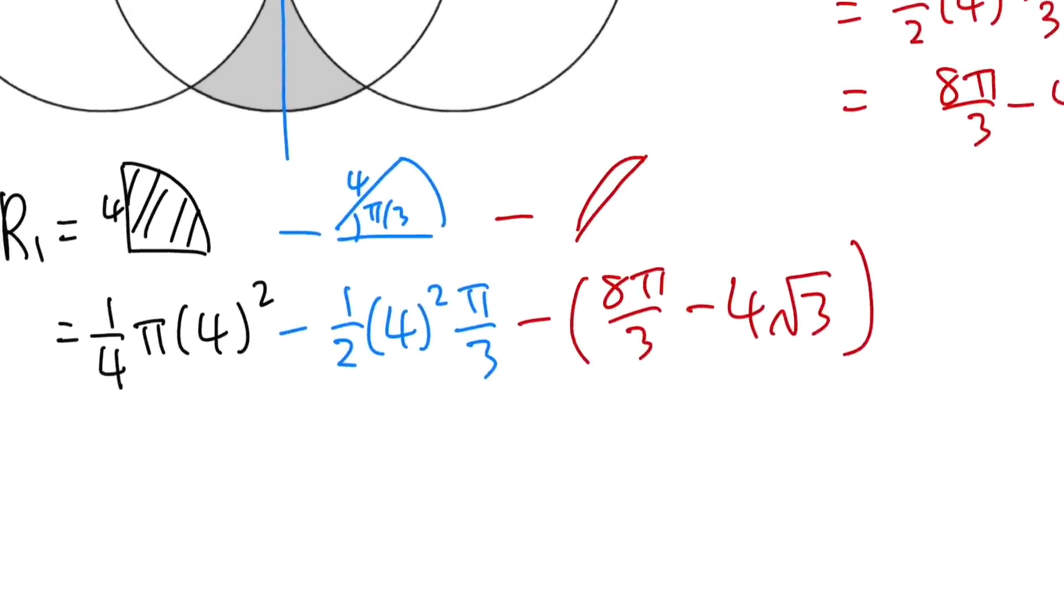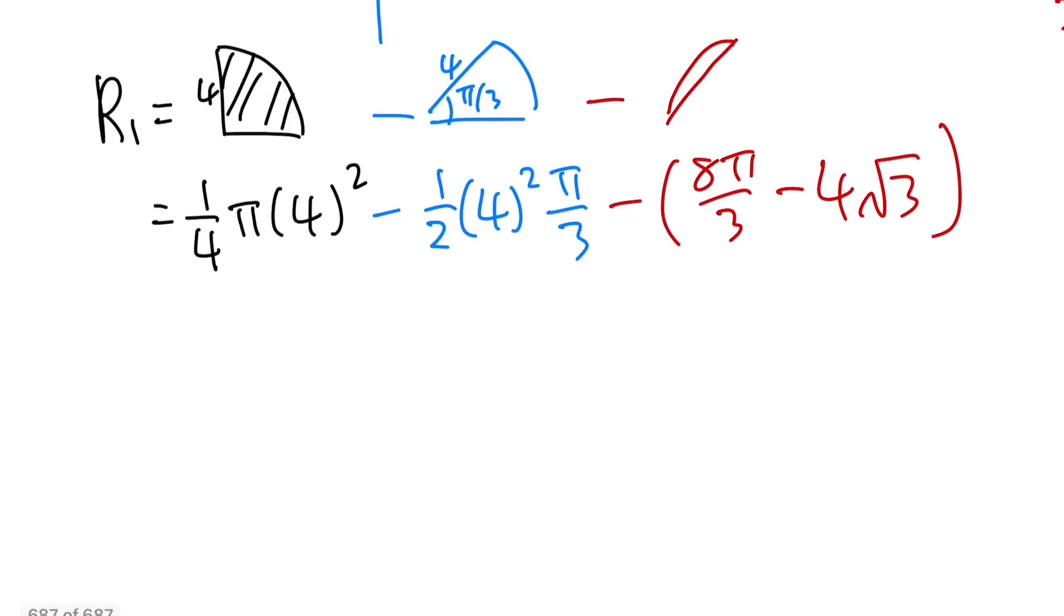I better get this right this time. So the rest is just clean up work. And also, of course, multiply by 4 at the end. So this right here: 4 squared is 16 divided by 4 is 4, so we have 4π. And then minus, this is 8, and then times π over 3. So 8π over 3. And then distribute the negative. So we have negative 8π over 3 and then plus 4 square root of 3.